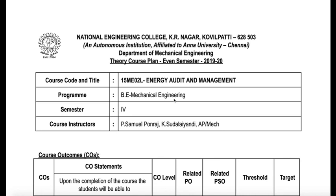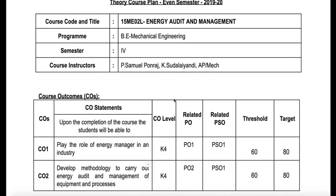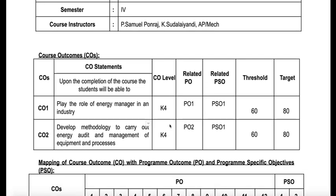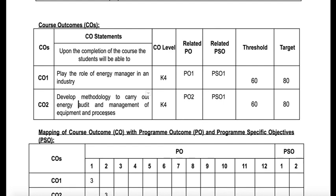This video will give you a broader understanding about the course plan of Energy Audit and Management. In this course you have two COs — course outcomes — which are under the level of K4. The first CO is to play the role of energy manager in an industry, and the second CO is to develop methodology to carry out energy audit and management of equipment and processes.